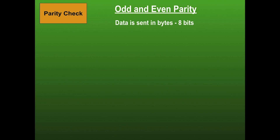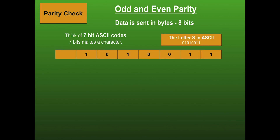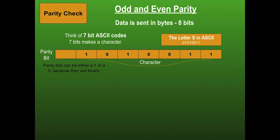Next up is a parity check. There are two types of parity: odd and even. This is applied to bytes of data, and a byte is eight bits. A useful example is ASCII codes — keyboard characters use seven-bit ASCII. For the letter S, only seven bits make up the ASCII value; the eighth bit is always zero in an ASCII table because it can be used as a parity bit. So we have seven bits for the character and one parity bit set to either one or zero.